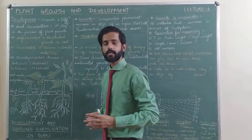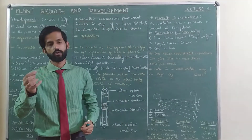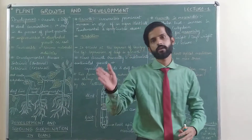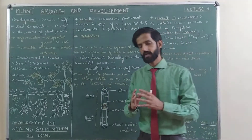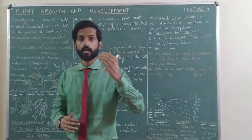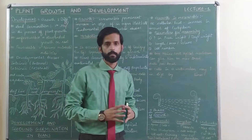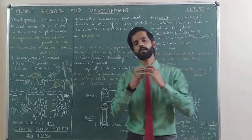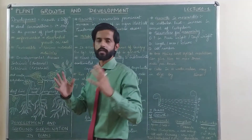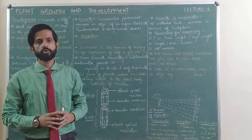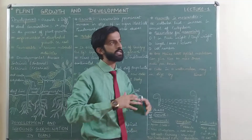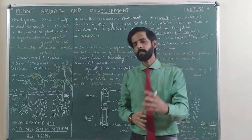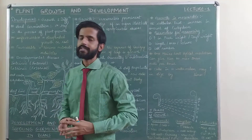We have learned that a seed is formed from a zygote, and all these parts of the plant are descendants of that zygote. But we can think about how different parts of the plant grow and develop — why do they begin, and what is the mechanism behind all of this? That's what we will discuss in this chapter.